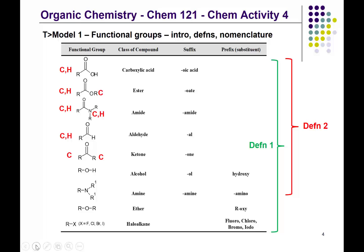For the alcohol, the R on the left-hand side has to be a carbon. If it were a hydrogen, we would have water. There is a connection between the alcohol functional group and water in that they're both polar and can engage in hydrogen bonding, but to be an alcohol, we need the OH group attached to a carbon chain or carbon ring. For amines, if at least one of the R groups is a carbon, we're okay — the other R groups can either be a carbon or a hydrogen.